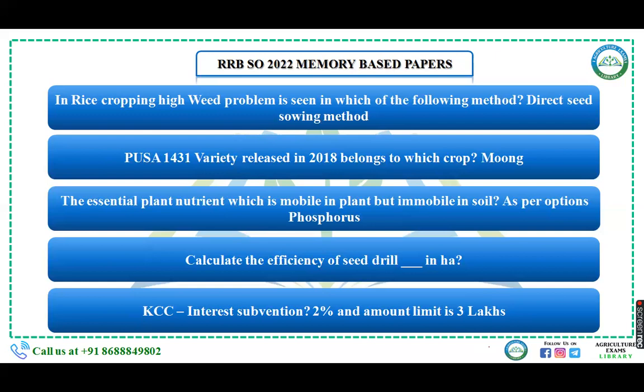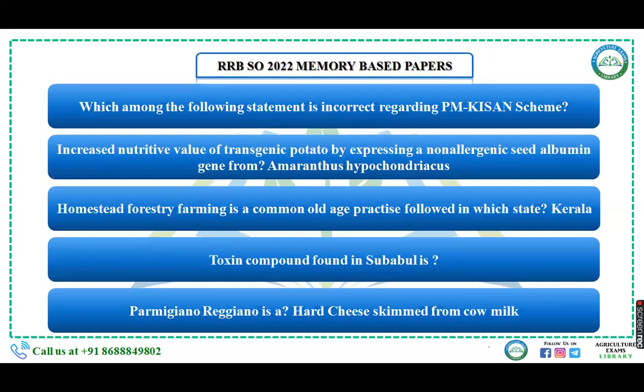One question was from the Kisan Credit Card (KCC) scheme: interest subvention of two percent and maximum loan amount up to three lakh rupees. Farmers are given loans up to a maximum of three lakh rupees; they get an interest subvention of two percent, and on timely repayment they get an extra three percent subvention, making the overall effective rate of interest four percent.